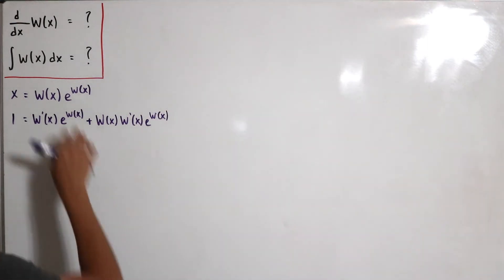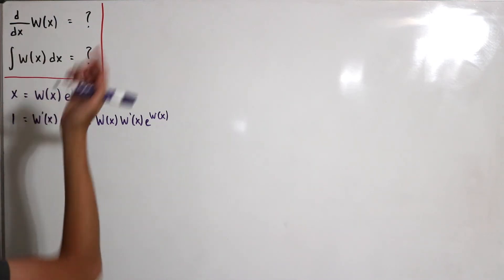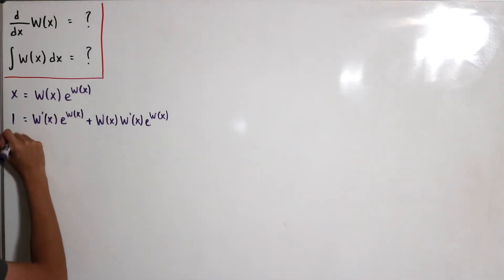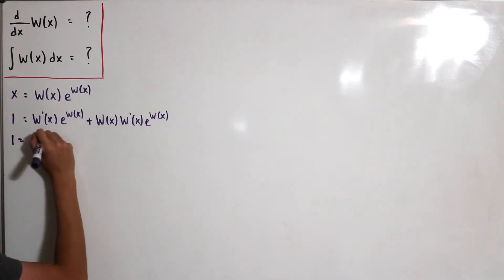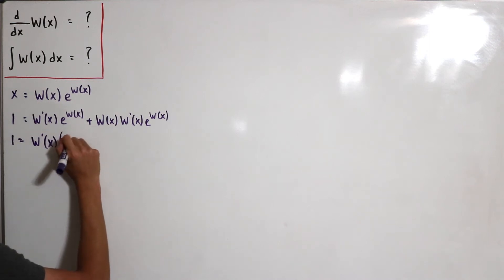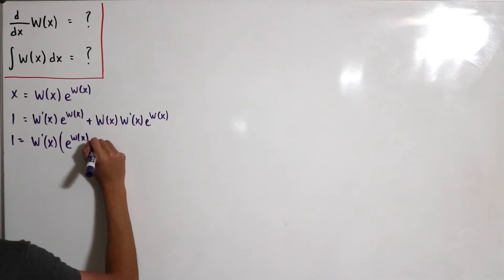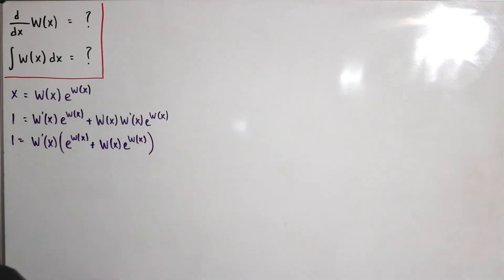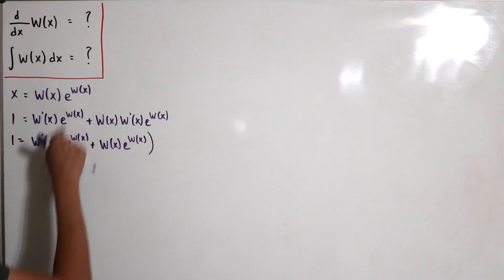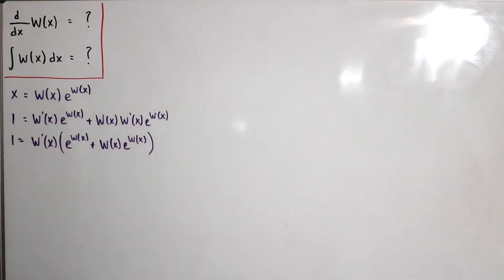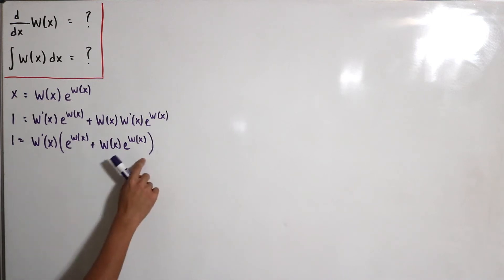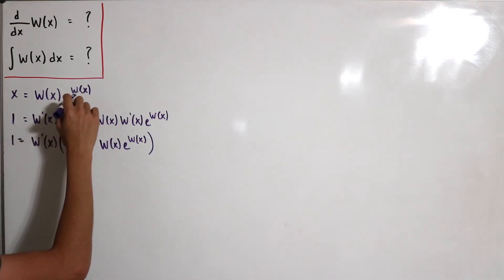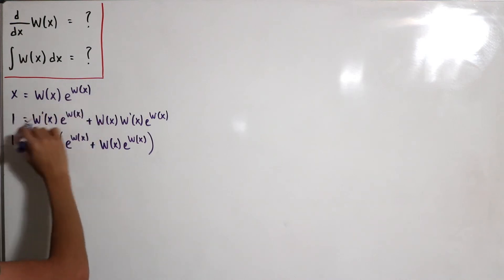Since d/dx[W(x)] = W′(x), we can factor W′(x) from both terms on the right side. This gives 1 = W′(x)·[e^(W(x)) + W(x)·e^(W(x))]. Now we can simplify: e^(W(x)) can be written as x/W(x) using the original definition.